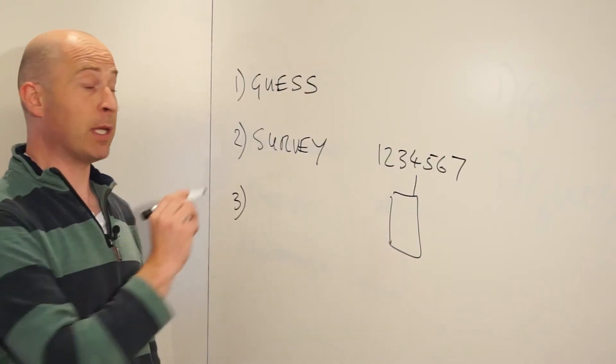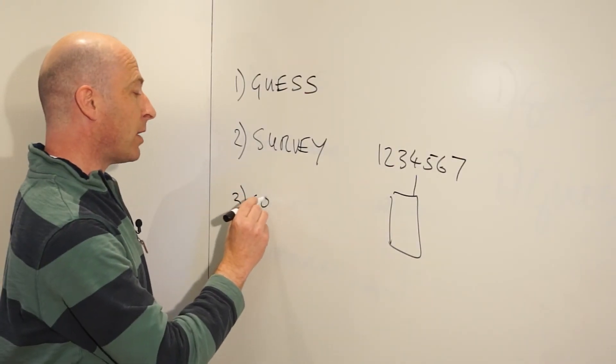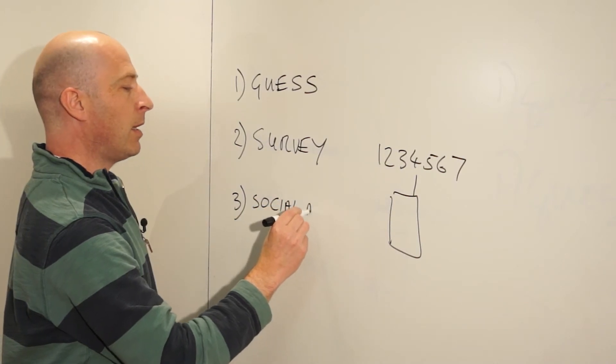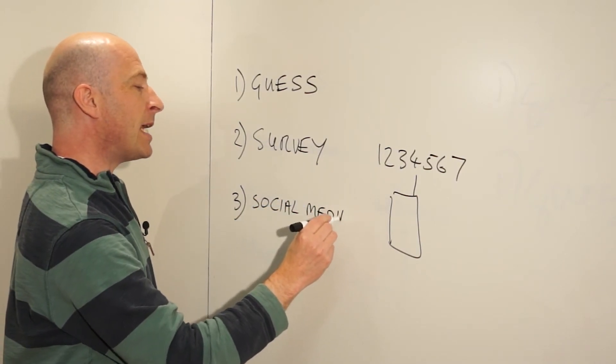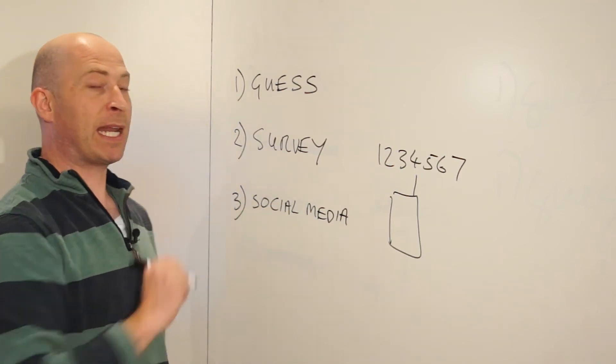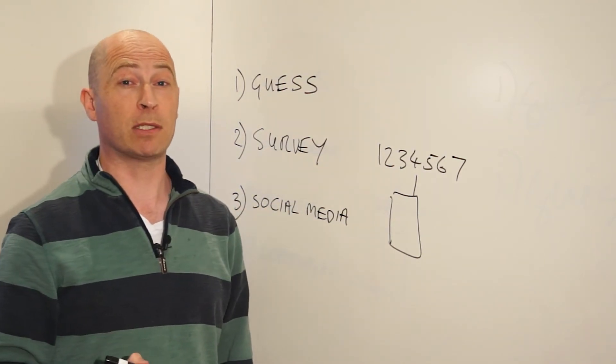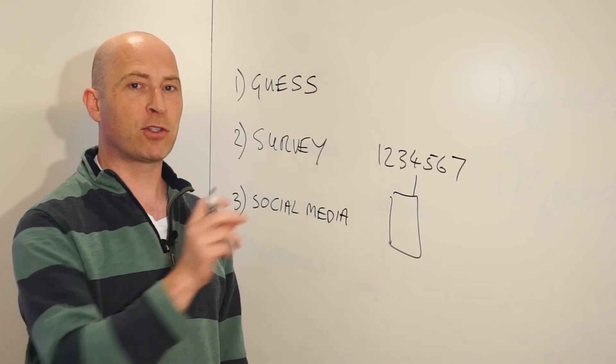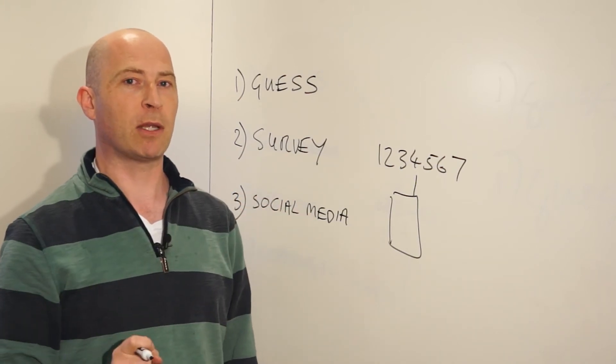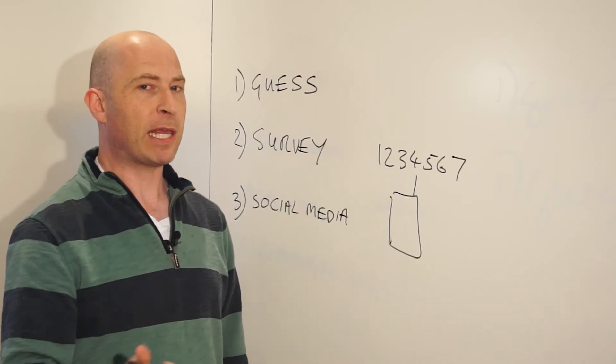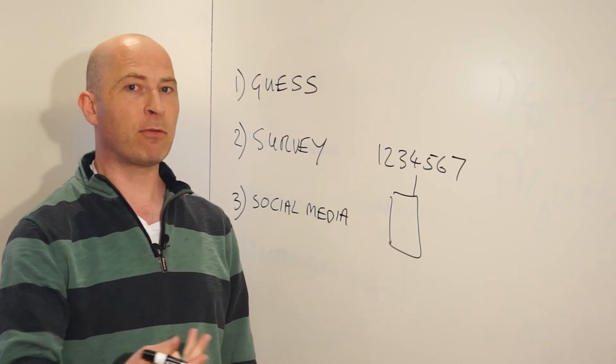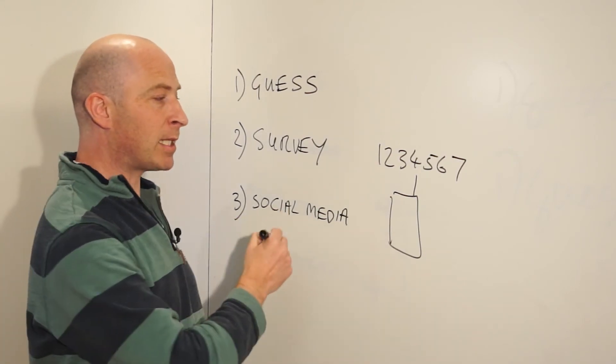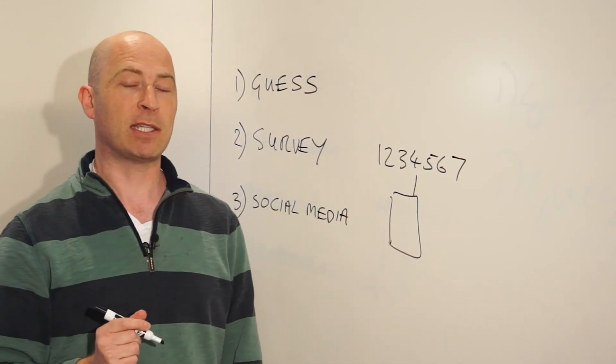The next thing that can happen to get your mobile phone number out there is social media. A lot of people are using social media these days. Your phone number can be harvested from social media sites. There are computers that will go out there and scrape your phone number off social media sites. They then have your phone number, they have your name, they may find other information about you, and then they'll use that to customize spam that's sent to your mobile phone.